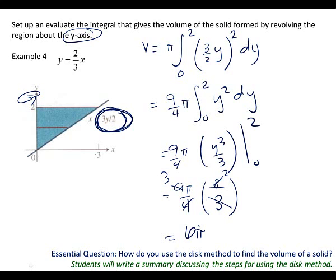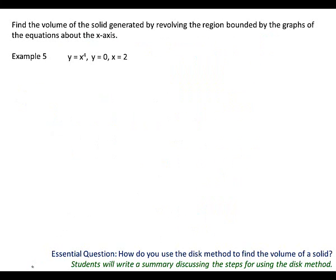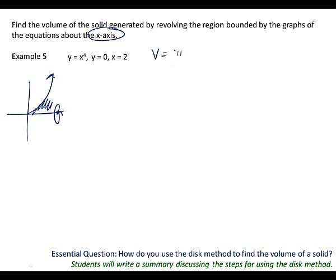Let's do five and six and then call it good. Find the volume of the solid revolved about the x-axis. This function is a fourth power — kind of like a steeper parabola. We're revolving here; the region is touching the axis of revolution, so we know it's a disk. Start with pi.